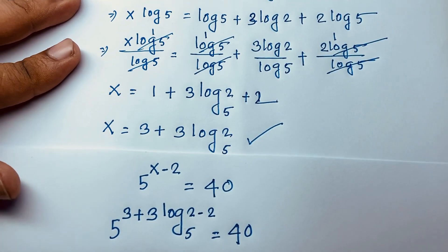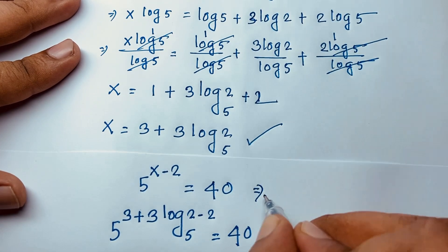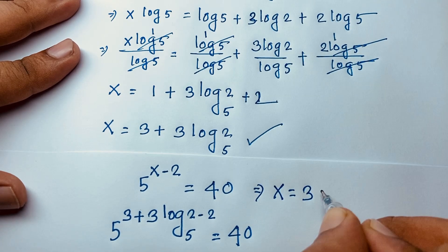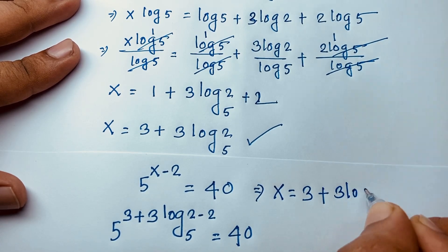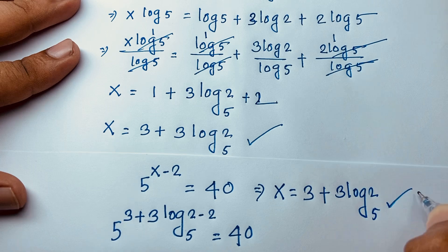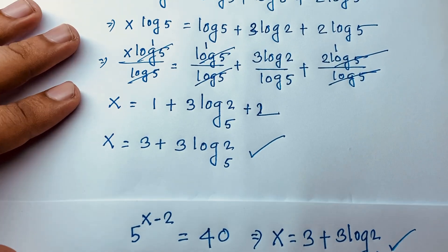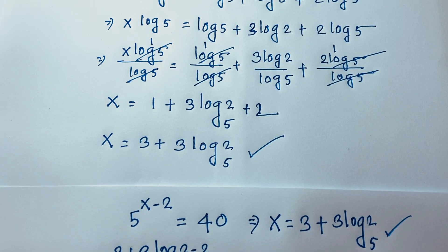Therefore, x is equal to 3 plus 3 log₅2. This is our final answer to this Math Olympiad question. Thank you all — if you enjoyed this video, please subscribe to my channel for other interesting videos. Goodbye, take care.